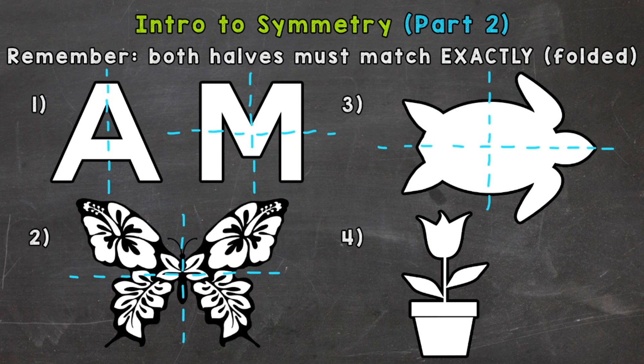So on to number four, where we have a flower in a pot, and this shape is actually asymmetrical, so it's not symmetrical. And we can try to put a line of symmetry here vertically. And it's close, but you'll notice the leaves on the sides are not perfectly matched up.